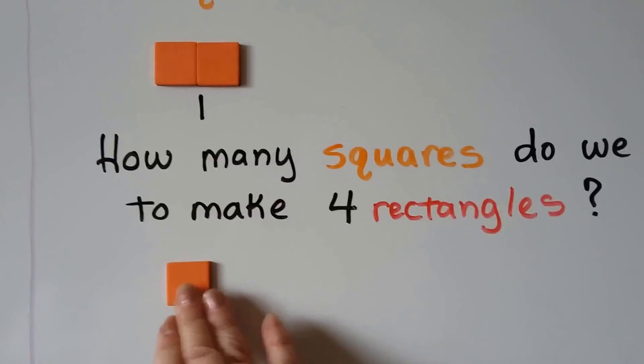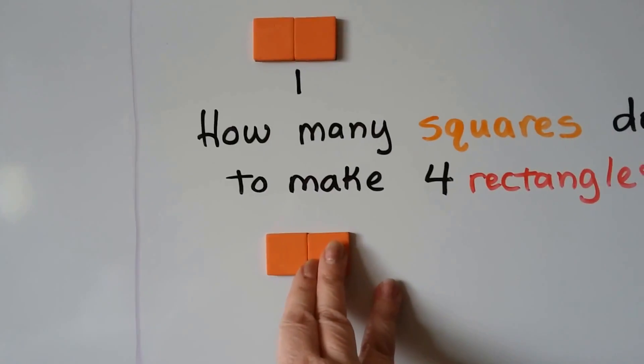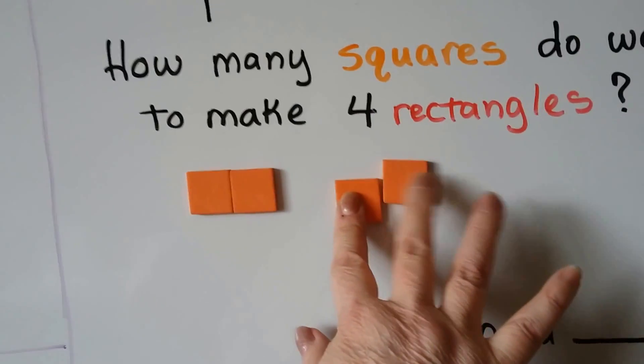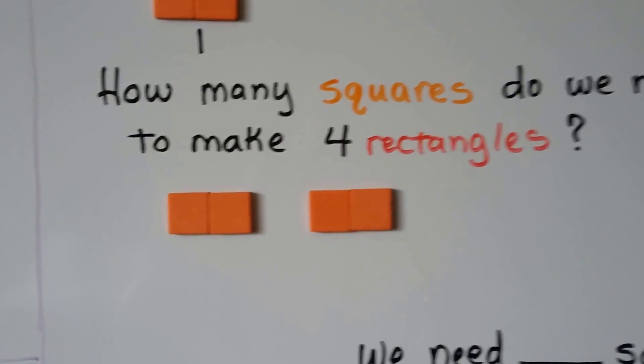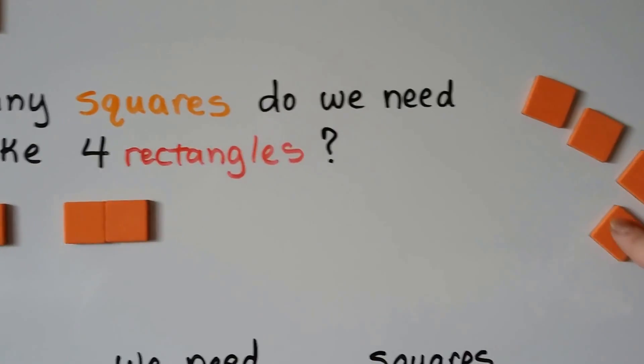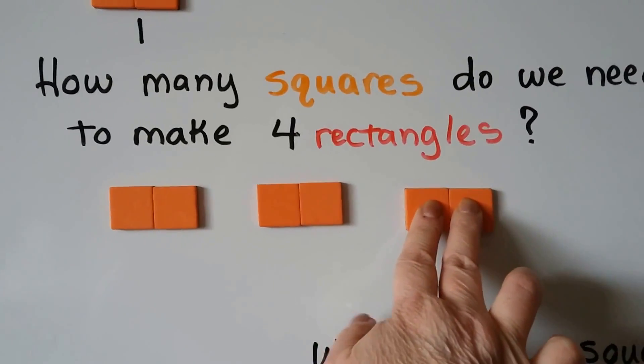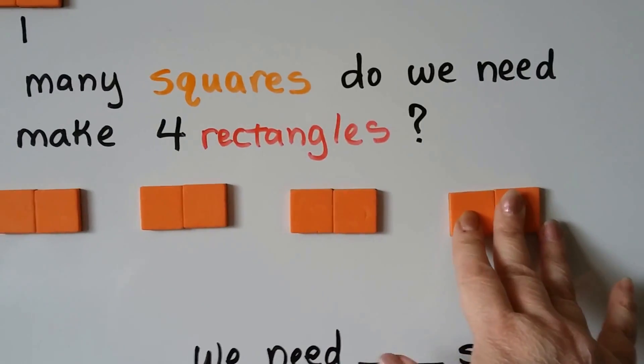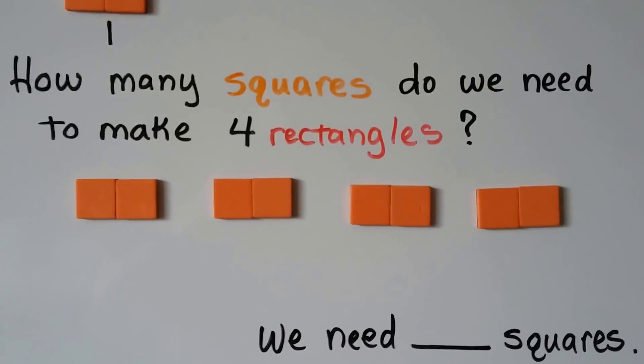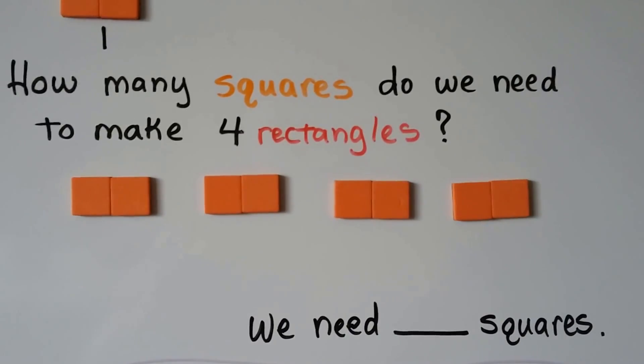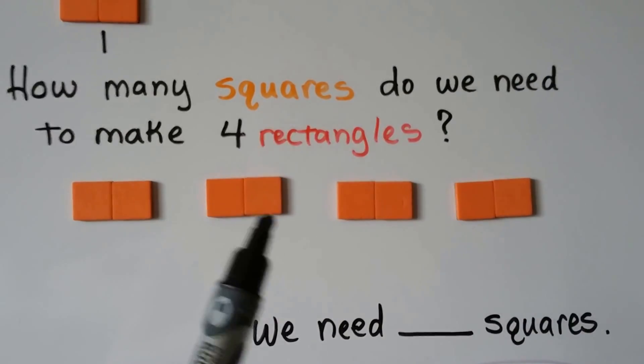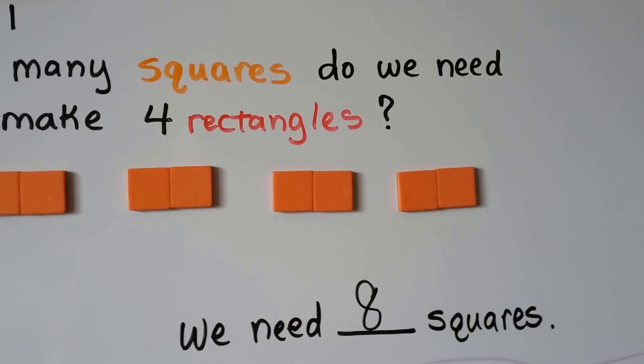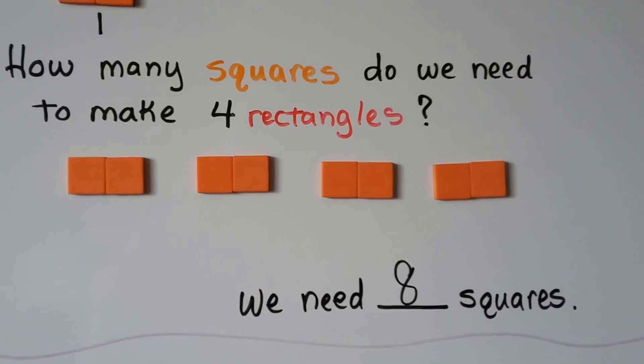We need to make four rectangles. So here's two squares. That makes one rectangle. We'll get two more. That makes two rectangles. We'll grab a couple more. And that's four rectangles. So how many squares do we need to make four rectangles? We've got two, three, four, five, six, seven, eight. Eight squares makes four rectangles.